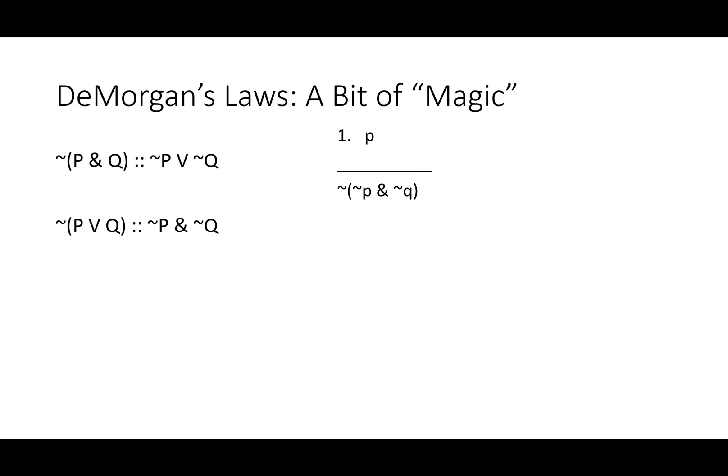Now take a look at this. We know something's true, P. Therefore, it's not the case that not P and not Q. Once again, we see that not P down there. We know that thing's false. So we know not P and anything else is false.